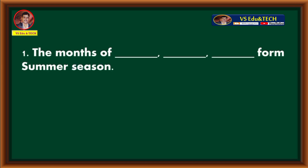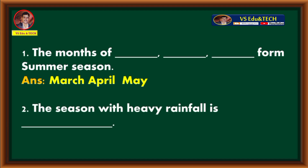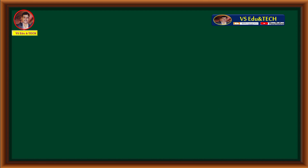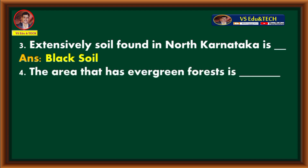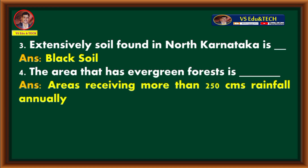First: the months of summer season are March, April, May. Second: the season with heavy rainfall is the rainy season. Third: the extensively found soil in North Karnataka is black soil. Fourth: the area that has evergreen forests is areas receiving more than 250 cm rainfall annually.